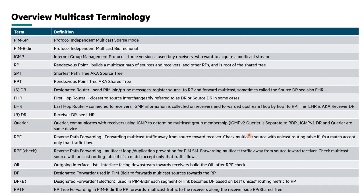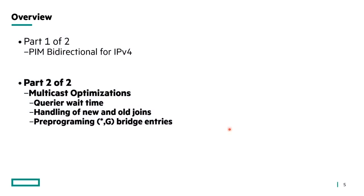I used this slide last time in the PIM bi-directional — some very useful information encoded in here. This is not just definitions, it's a bit of explanation too. We're today really going to be talking about layer 2 type of multicast. IGMP is important here, and to a certain extent around queriers as well, which is one of the features. I've already covered PIM bi-directional last week, and today I'm going to be covering three optimisations around multicast.